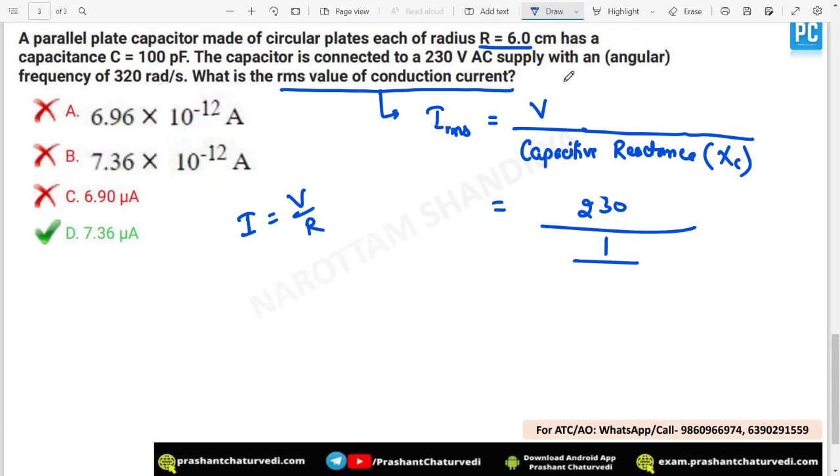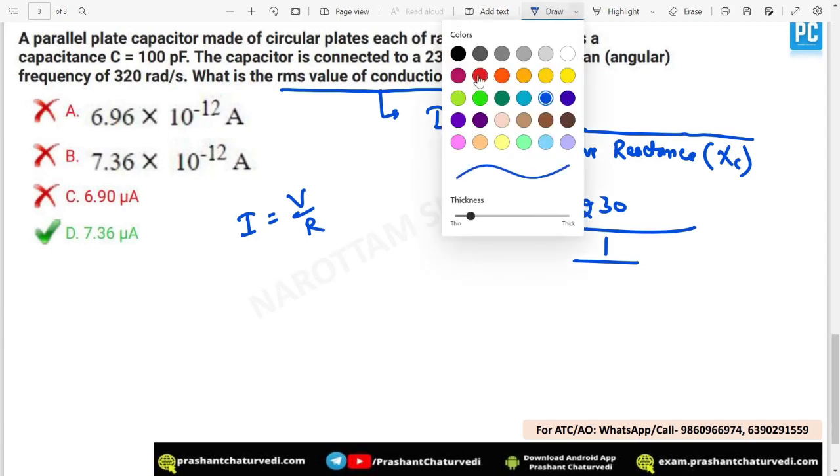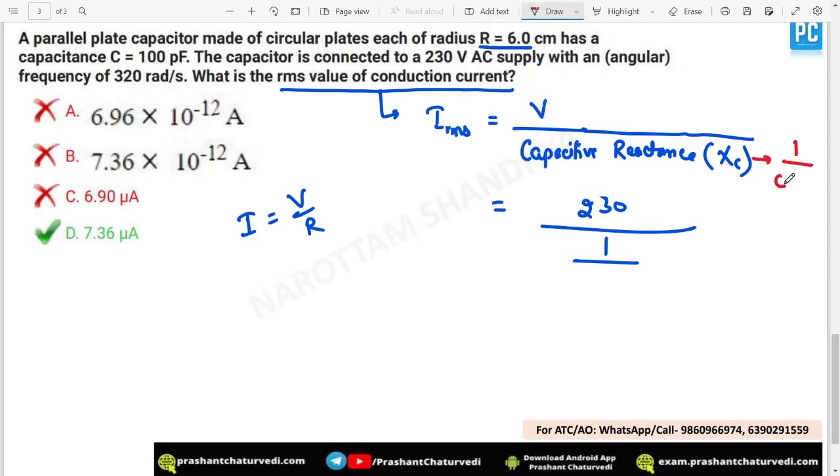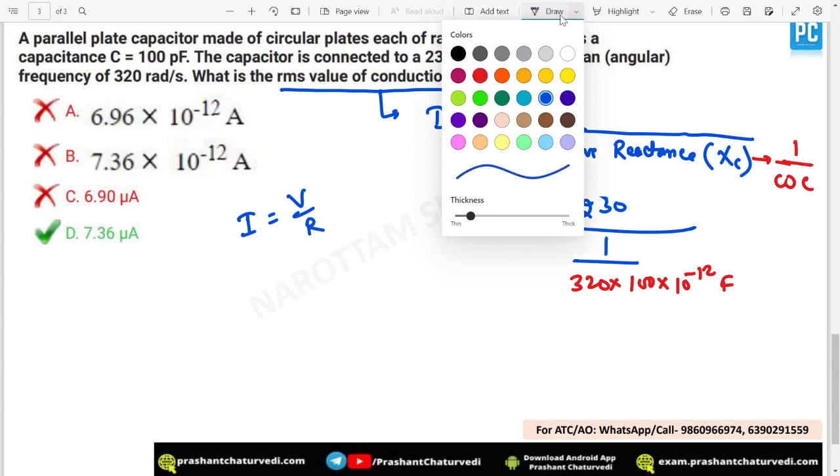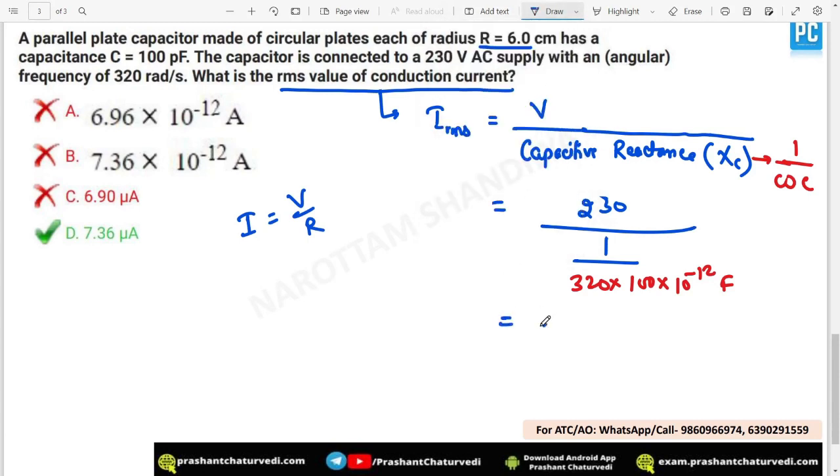What is the value of this? The value of this is 1 upon Omega C, which is very easy. You do not need to unnecessarily get panic here. Directly 1 upon, it will be 320 into capacitance they had mentioned as 100 picofarad. 100 picofarad. Pico means 10 to the power minus 12. Directly, when you will be solving it, you will be getting like 230 into 320 into 100 into 10 to the power minus 12. And, of course, it is current. So that is why the answer will be ampere.